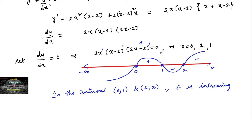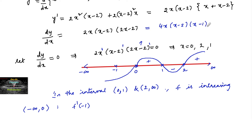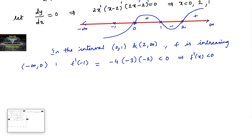Alternatively, without the wavy curve method: rewrite f'(x) = 4x(x-2)(x-1). For the interval (-∞, 0), take x = -1: f'(-1) = 4(-1)(-1-2)(-1-1) = (-4)(-3)(-2), which is negative. So f'(x) < 0, meaning the function is decreasing on (-∞, 0).